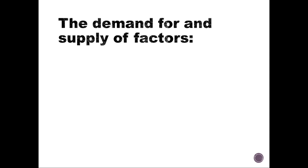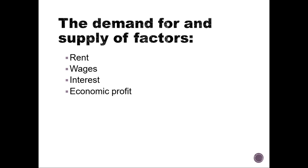Looking at the demand for and supply of factors, we have rent, wages, interest, and economic profit. Rent is for land, wages is for labor, interest is for capital, and economic profit is for enterprise.